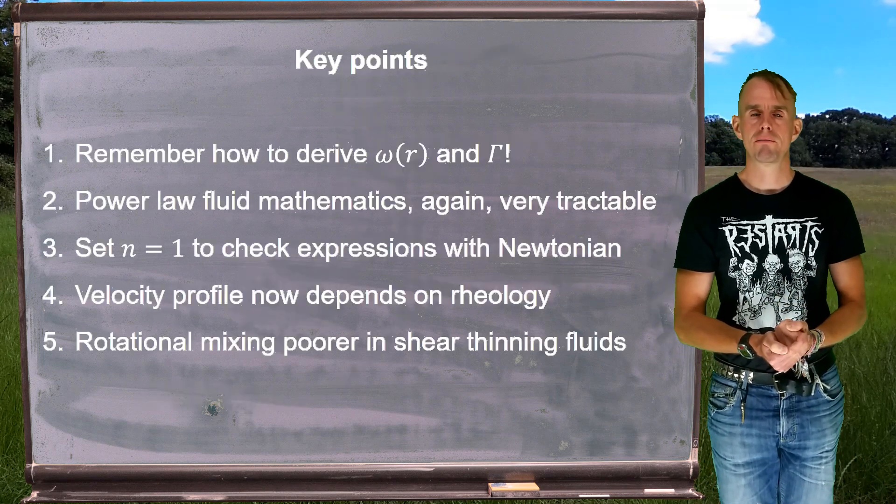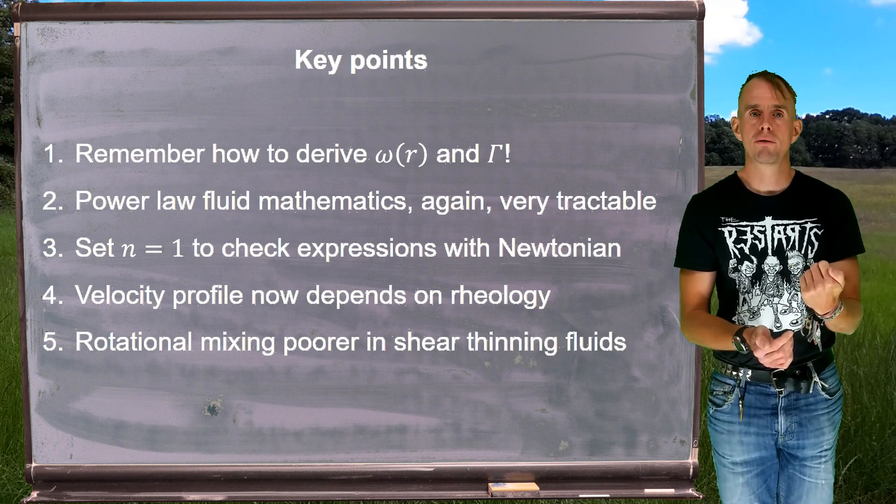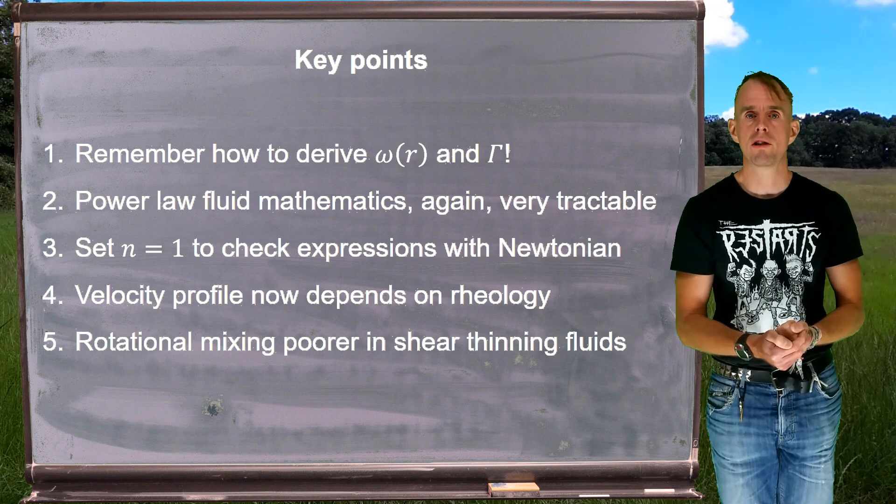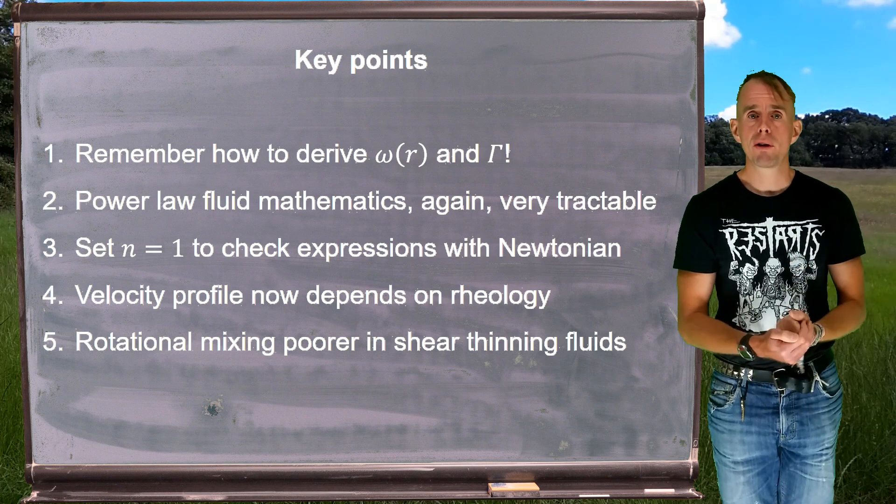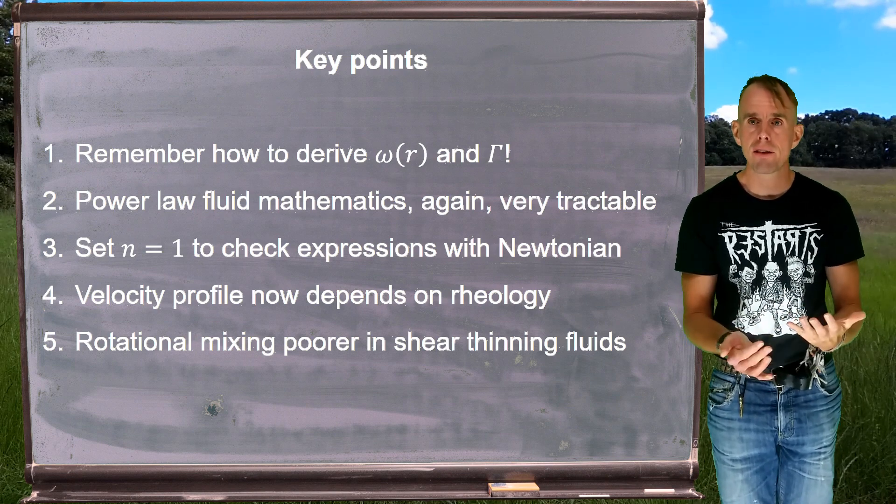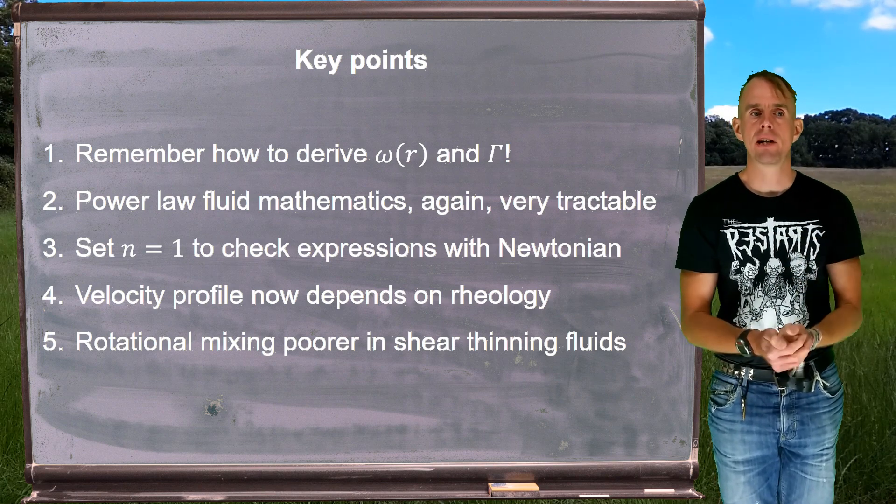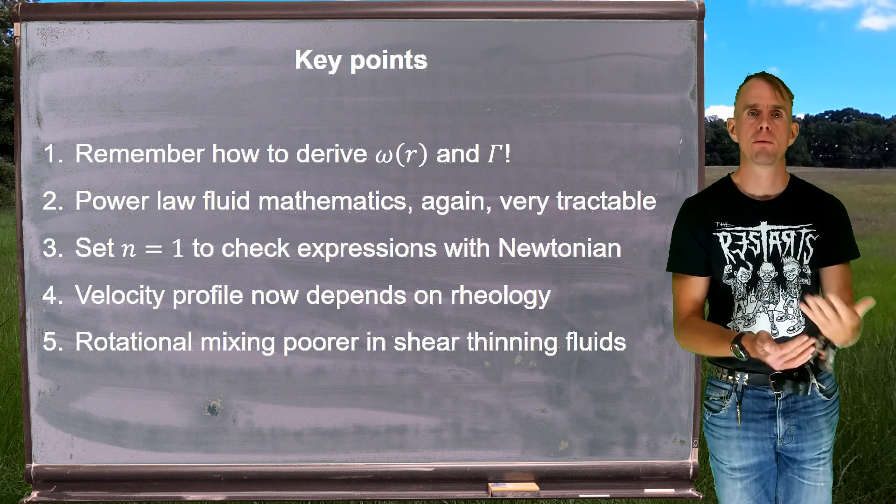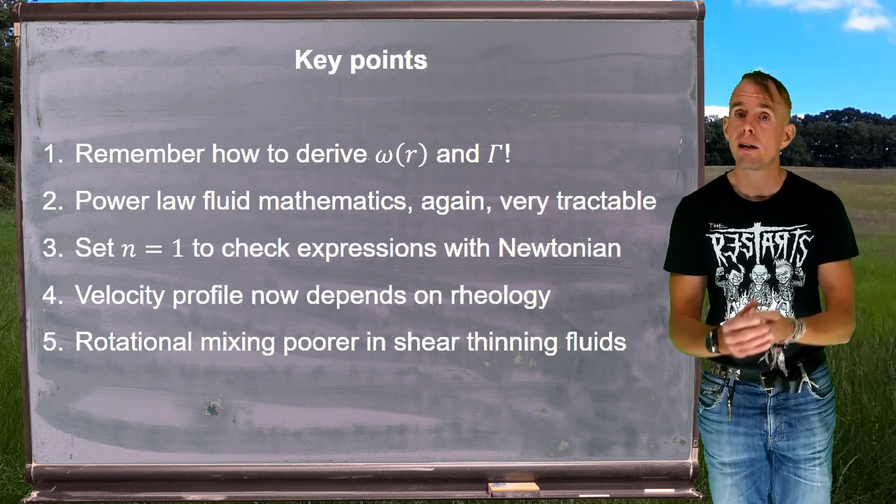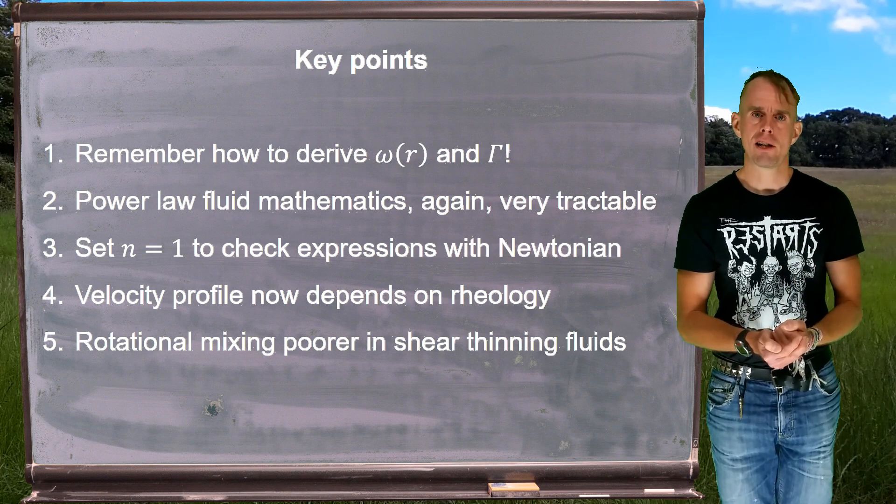Now, let's recap a few key points. We've re-examined the Couette cell and we've looked at how to derive our angular velocity field as a function of radius. And in doing so, we've reminded ourselves what torque is equal to. For a power law fluid, we've seen that the mathematics is tractable. We have to be a little bit careful in handling indices and fractions, but other than that, it's straightforward. We can, again, perform our sanity check by setting n equals to 1, our power law index equals to 1, to make sure that we revert to a Newtonian expression. And if we do, we know we're correct. And if we don't, we know we've made a mistake.